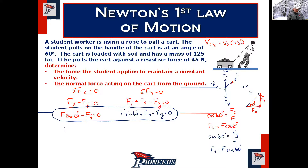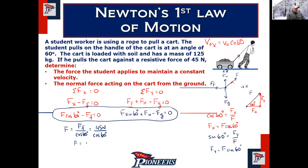Friction is 45 newtons, so solve for F: add friction to the other side, divide by cosine(60). Cosine(60) is 0.5, so F equals 45 divided by 0.5, which gives 90 newtons. Make sure your calculator is in degrees. Now substitute F equals 90 newtons into the y-equation. In the previous horizontal problem the normal force equaled gravity, but now it equals gravity minus the applied force times sine of the angle.